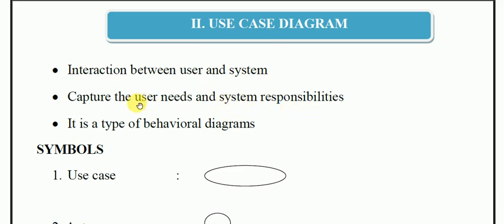What does the Use Case Diagram do? It captures user needs and requirements. It is a behavioral diagram — a type of behavioral diagram that represents dynamic behavior of the system.